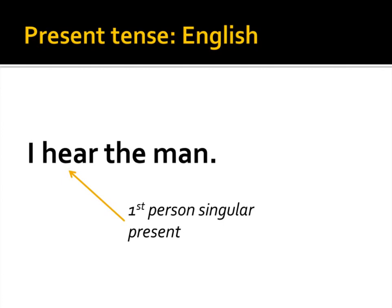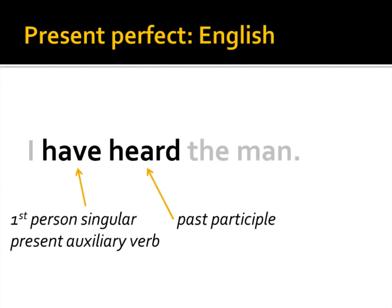What is the present perfect tense? Let's take a look first at the present tense in English: 'I hear the man.' We have subject-verb agreement — the subject is the first person singular pronoun 'I,' and 'hear' is the first person singular present tense form of the verb. It reports on an action happening now. However, we can make a present perfect tense by changing 'hear' to the past participle 'heard' and adding the first person singular present auxiliary verb 'have.' The present perfect tense is essentially a two-verb construction: we have the past participle and a helping verb, which is some form of 'to have' in English.